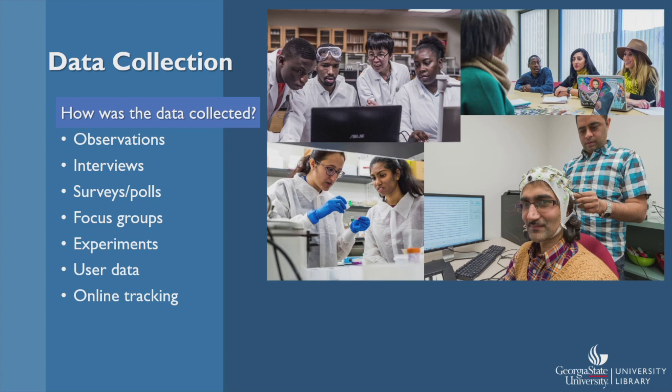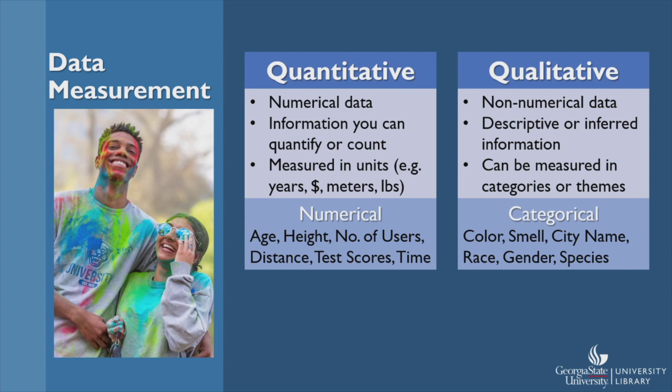We'll talk more about this when we discuss big data. When we evaluate data, it's important to know the level of measurement that was used. We can think of levels of measurement for data in two ways: quantitative and qualitative. Quantitative data is information you can quantify or count in units, like weight, density, and length. Quantitative data is also known as numerical data. It can help us get at the what, where, when, how often, how many, or how long.